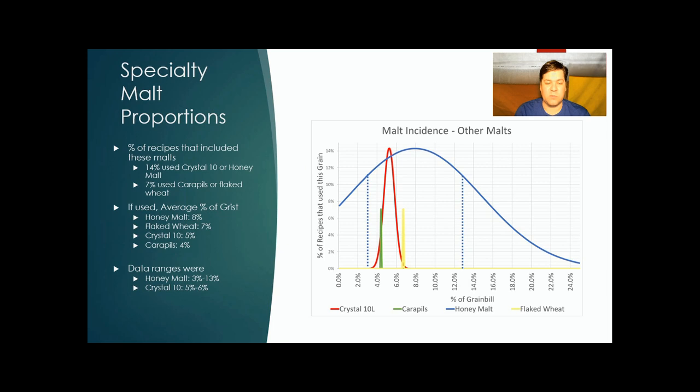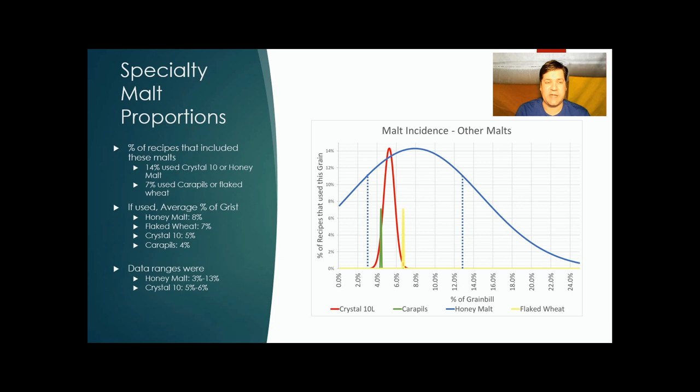Other malts. 14% of recipes used Crystal 10 or honey malt. 7% of recipes used Carapils or flaked wheat. The range for the honey malt was 3% to 13%, so a big variation. And the range for the crystal was 5% and 6%, a really sharp curve. If these specialty malts were used, honey malt was used as 8% of the grist, flaked wheat as 7%, and Crystal and Carapils were 4% or 5% of the grist.